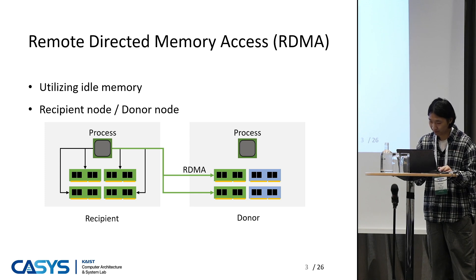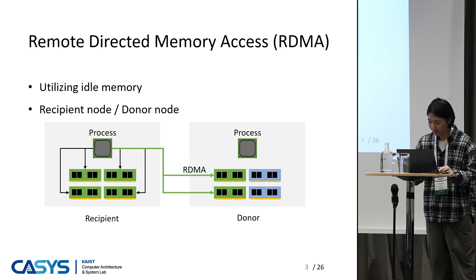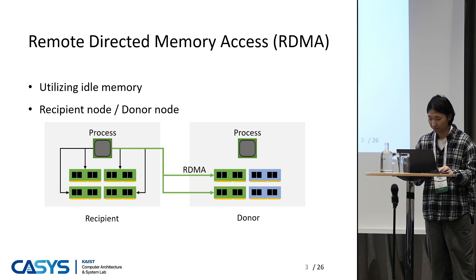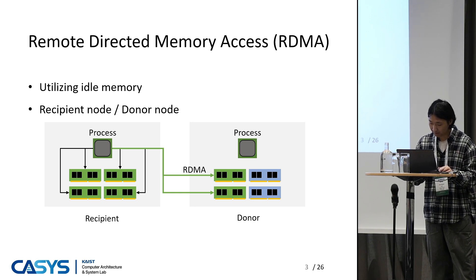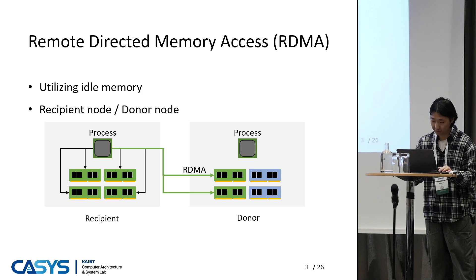This diagram shows how one node donates memory to another, and the pages are exchanged over the network. In this figure, on the right, the donated memory is shown in green. In this paper, we call the donating node a donor and the receiving node a recipient.